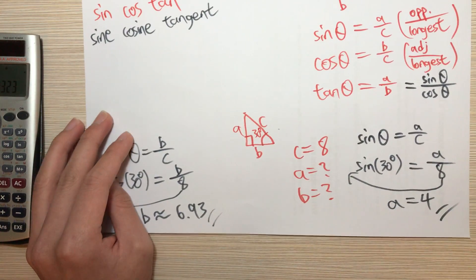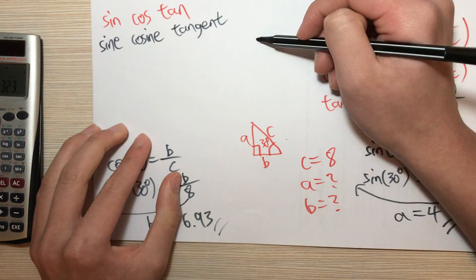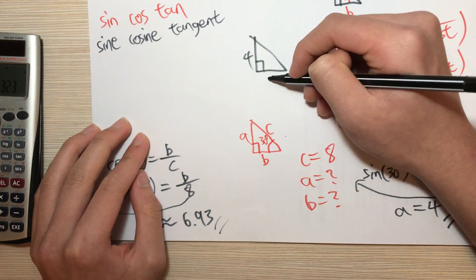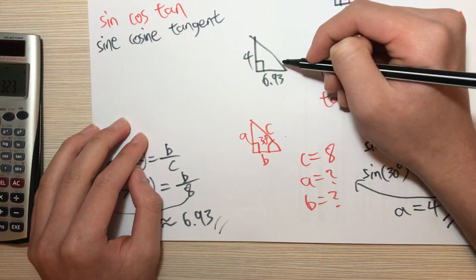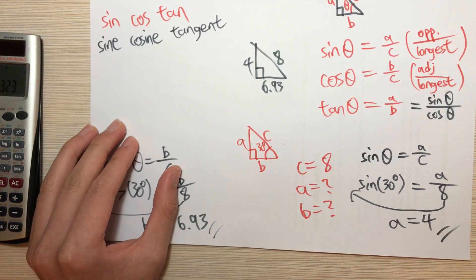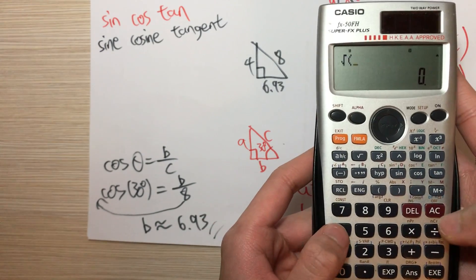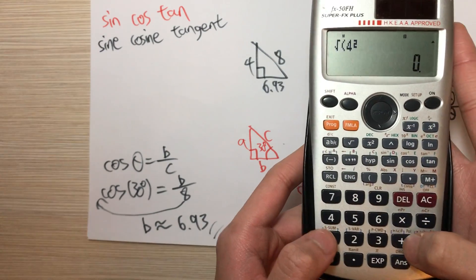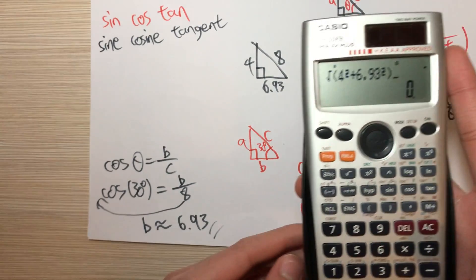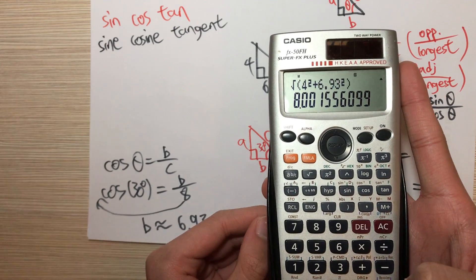So I will use Pythagoras theorem to prove it. Now A is 4, B is approximately 6.93, and C is 8. If it is true, then square root of 4 squared plus 6.93 squared should be almost equal to 8. Now let's see the result.